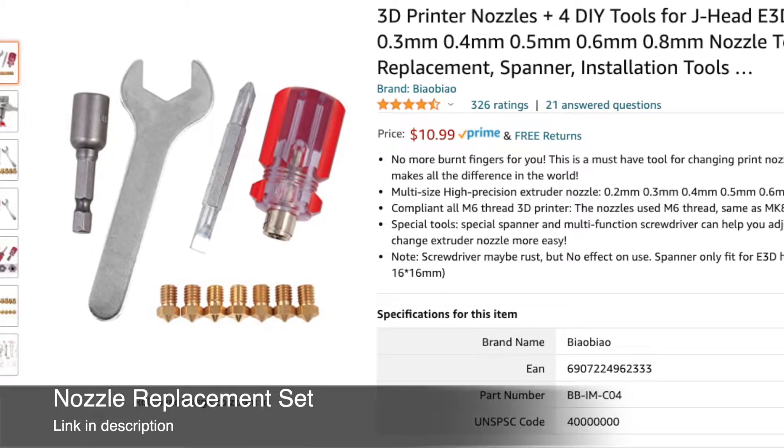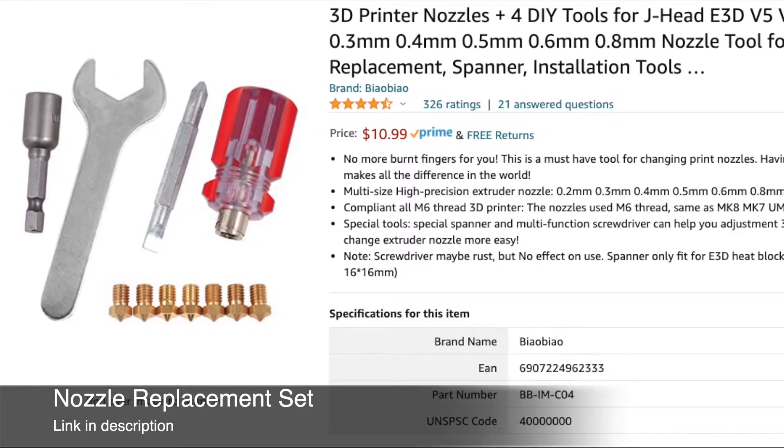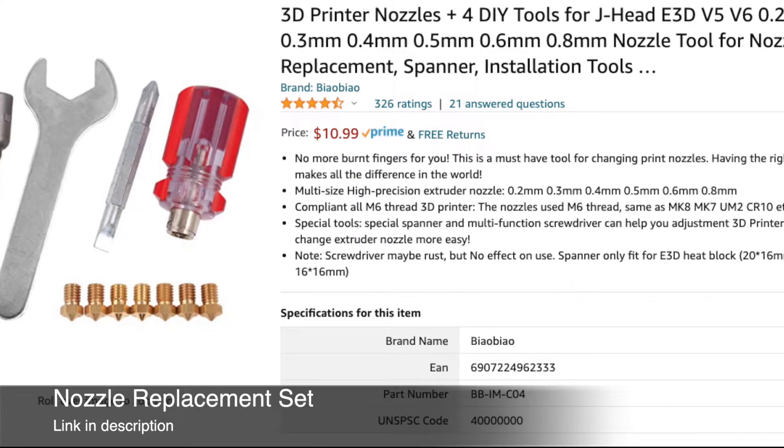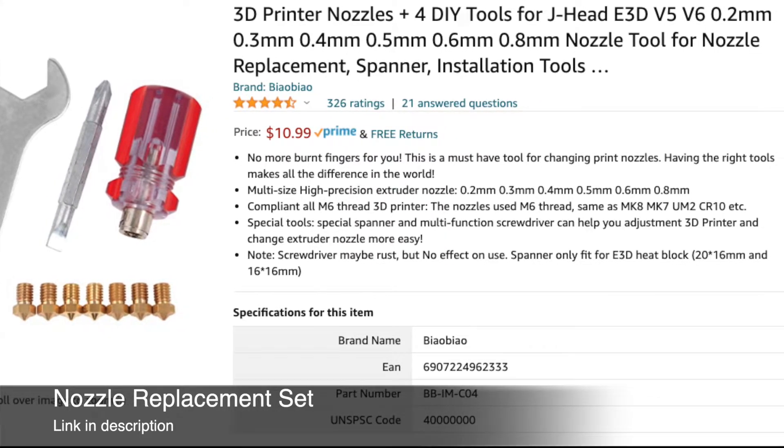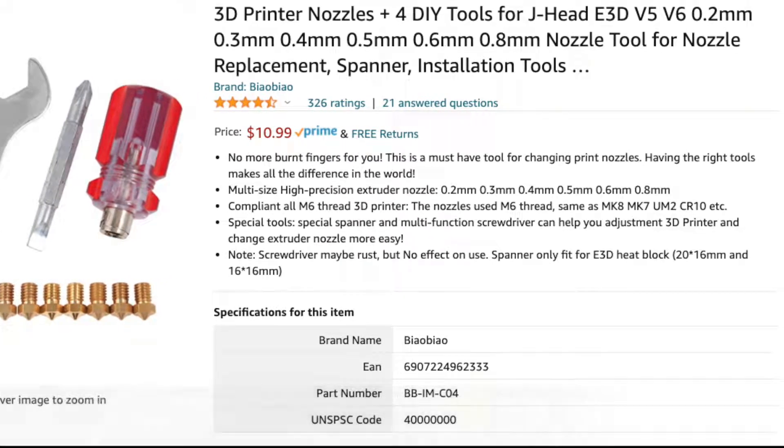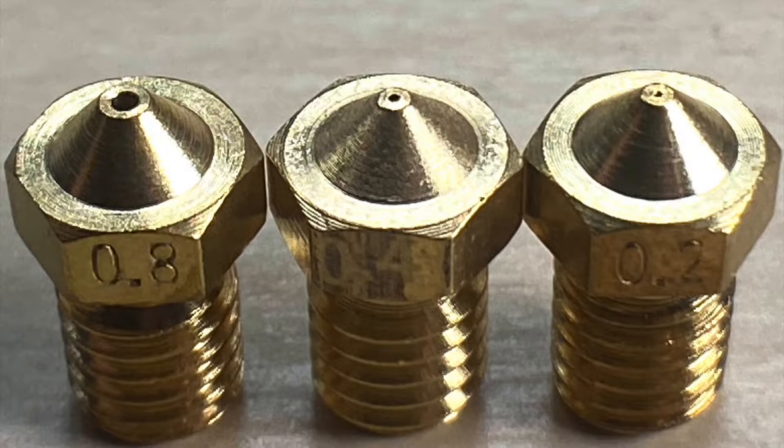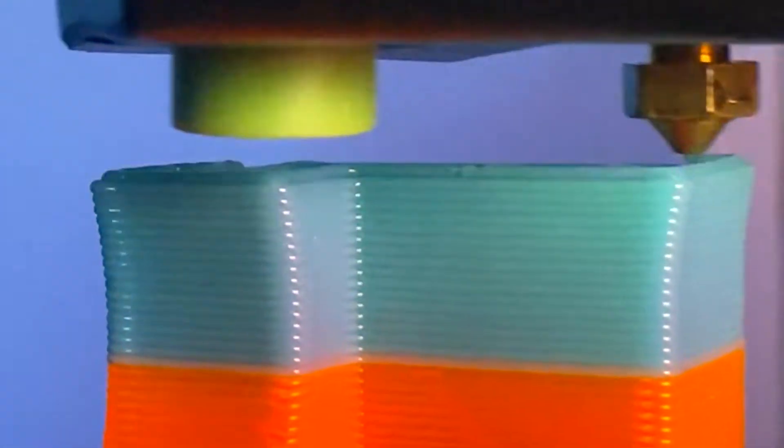I purchased this $11 nozzle replacement set on Amazon that included nozzles from 0.2 all the way up to 0.8mm. It also included the tools required to replace the nozzles on my printer. You can see here the difference in nozzle width from 0.8 down to 0.2. In a recent video, I used the 0.8mm nozzle to print out a benchy using some pretty large layers.